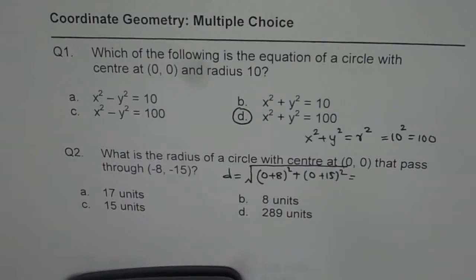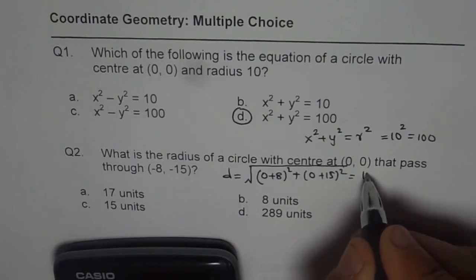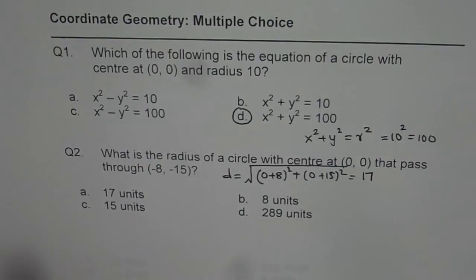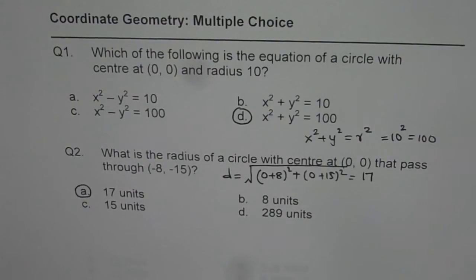So it is square root of 8 square plus 15 square and that gives you 17. So don't hesitate to use calculator in these questions. You will need a lot of calculation. So 17 units is the right answer.